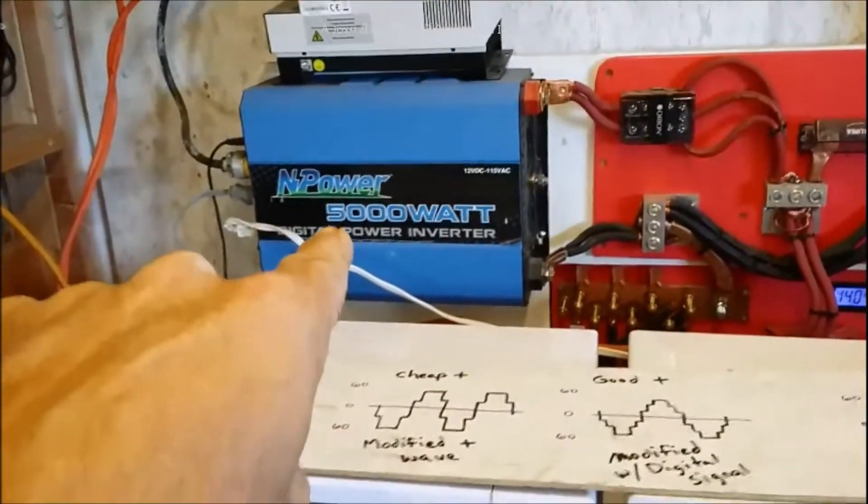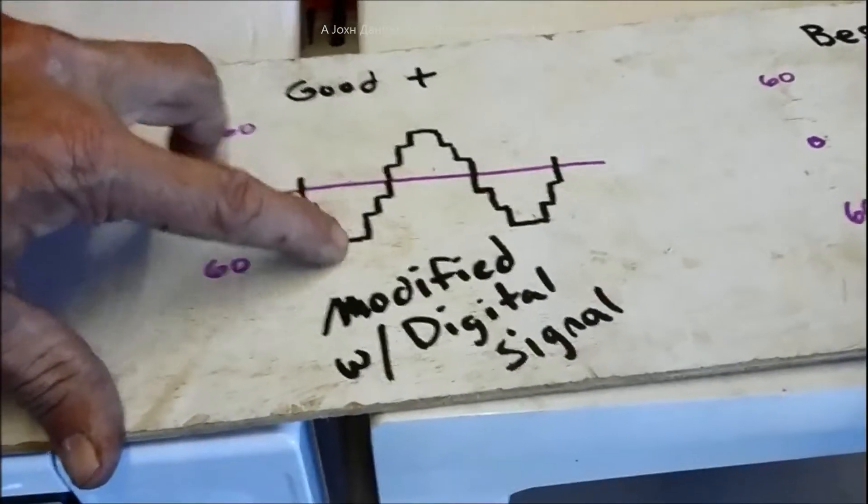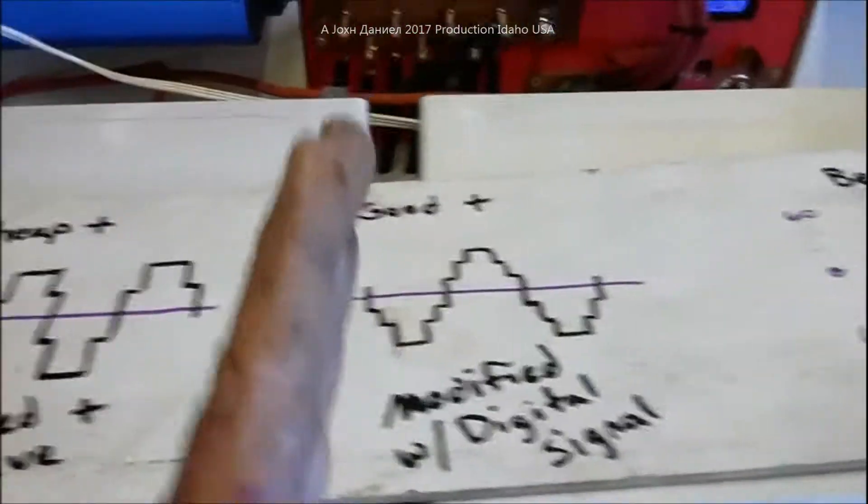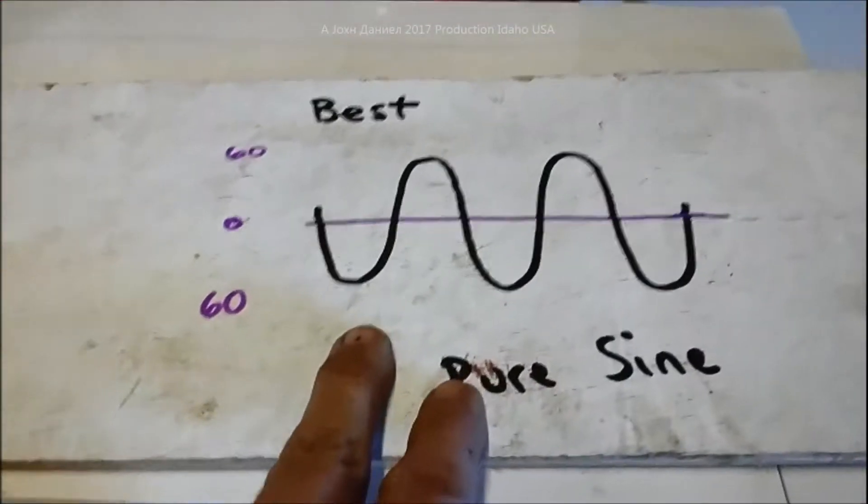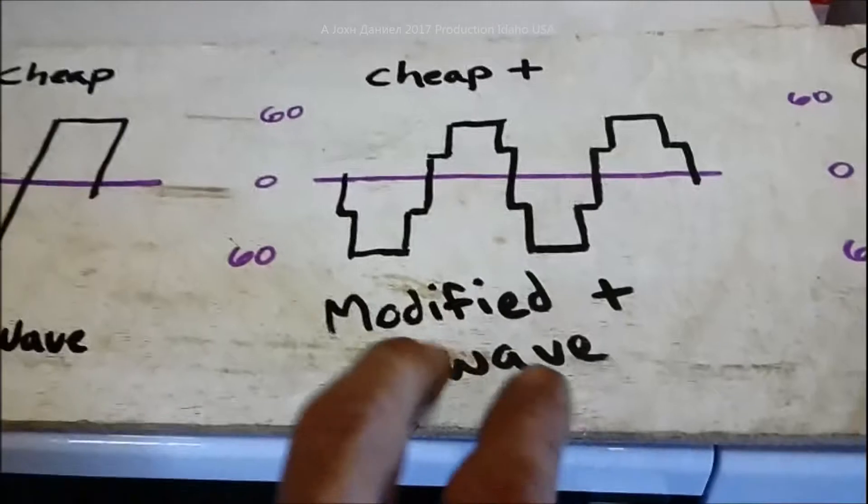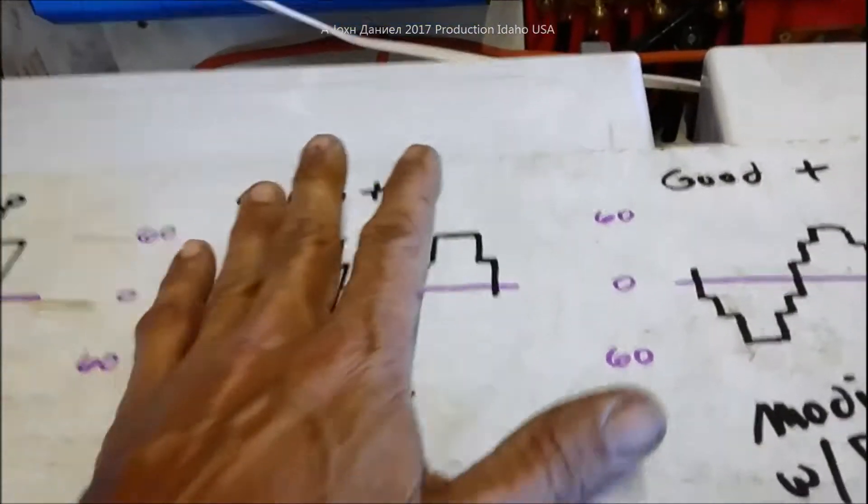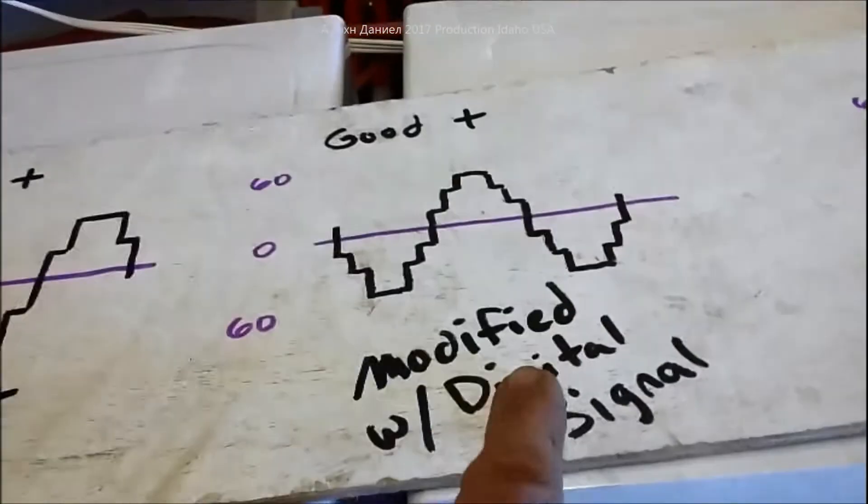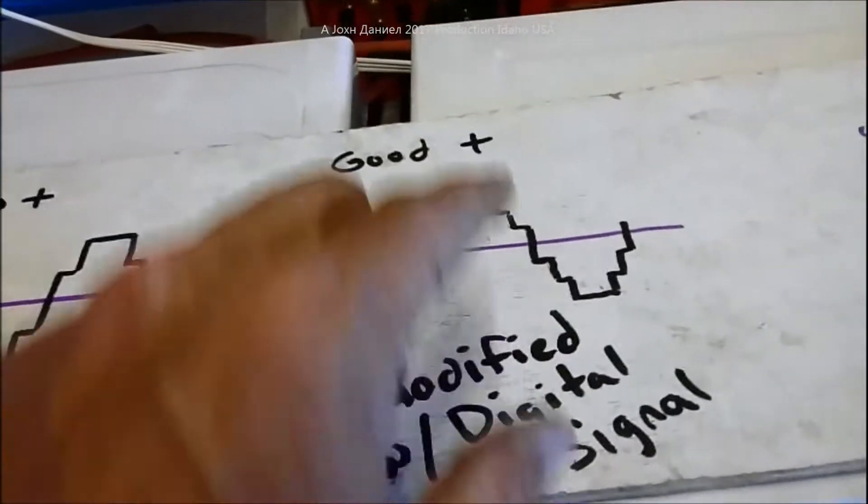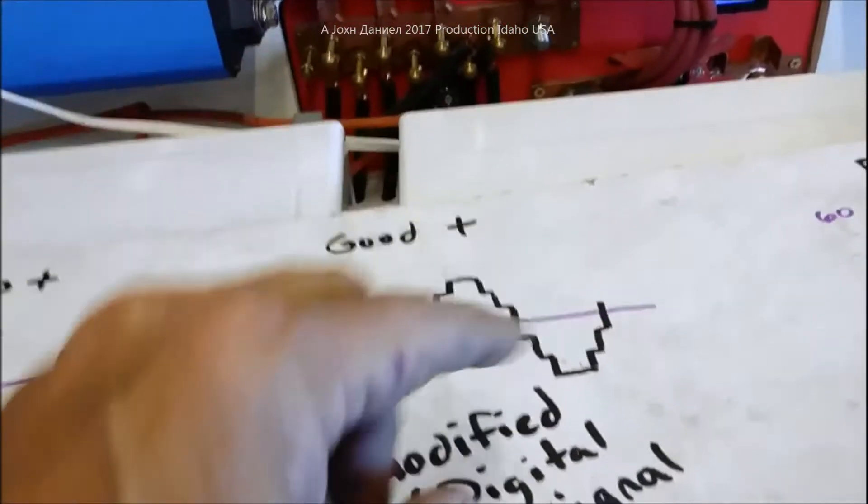What I have is these plugged in currently to a digital inverter that has a unique modified wave. It has this modified digital signal, so you'll see that it has numerous steps in its square wave. It's very close to making it a pure sine wave, it's not very notchy as they say. This one here would be a modified plus like a Power Bright, a Go Power, still good inverters.